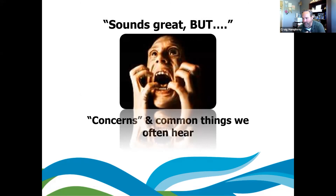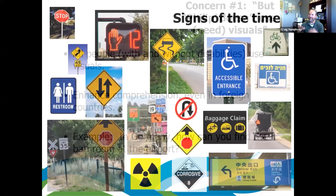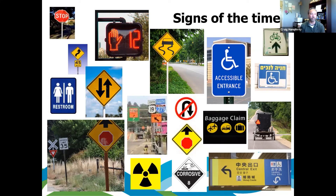The last section is the 'sounds great, but' concerns — things I often hear. Number one: 'Philip doesn't need to use visuals — he knows his schedule.' Well, we all use schedules and visuals. How do you find a bathroom in Germany when you don't speak German? You use a sign. Baggage claim signs, detour signs, accessible parking signs — we all process visuals. I can see a red octagon and I'm hitting the brake before I even fully process it. Signs of the times — visuals are out there. We use them every day. Look on highways, in airports, in grocery stores. Just look at how many visuals are out there.